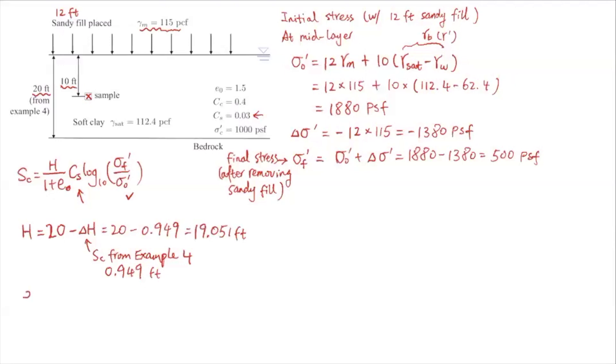And e₀, we're given this e₀. This is from example 4. This is basically the data before you're putting sandy fill on top. So the new void ratio for this rebounding calculation for this example is 1.4, minus that Δe we calculated from example 4. So this is Δe from example 4. So that's the void ratio change due to primary consolidation. And this is 1.382.